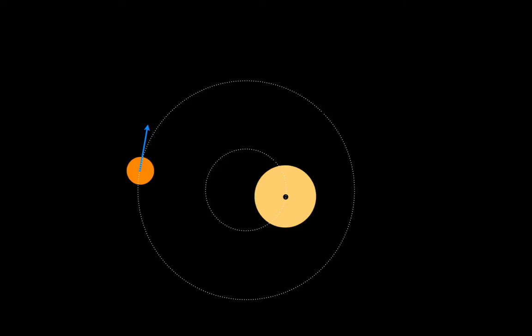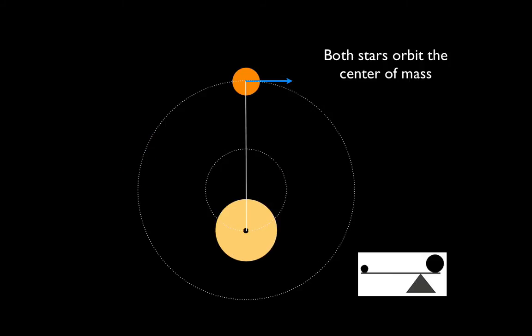But now, instead of the other star at the focus, the stars appear to orbit an empty point in space. That point is called the center of mass of the system. And it's equivalent to the fulcrum point on a scale, the midpoint between the two masses where their weights would be balanced.